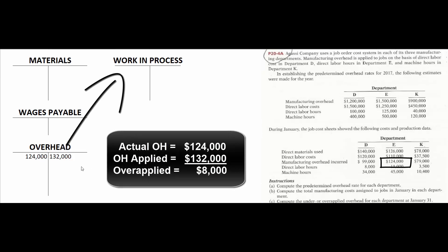Actual overhead incurred was $124,000, so we're $8,000 over-applied this month. Hopefully next month will be $8,000 under-applied. If we get to the end of the period with a large number, we'll sprinkle some into work in process, some into finished goods, and some into cost of goods sold. If it's small enough, we'll just close it into cost of goods sold.